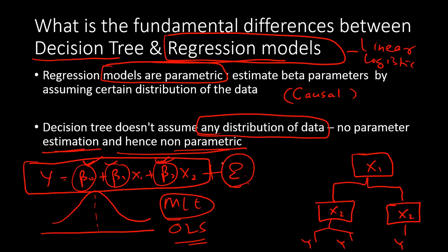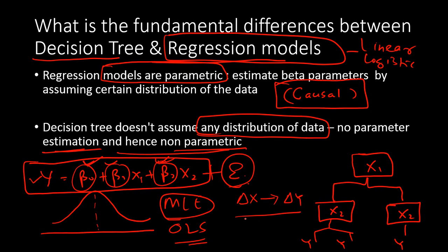This fundamental difference gives rise to different challenges and different merits and demerits. One advantage of a parametric model is that you can explain the causal relationship between the predictors and the target variable. You can say: if you increase x1 by 1 unit, how much will y increase? That marginal change — delta y over delta x — can be found by knowing beta 1. The sign of beta 1 tells you whether y goes up or down.